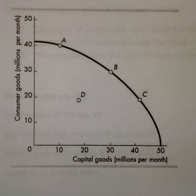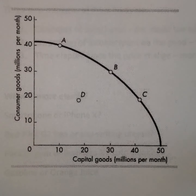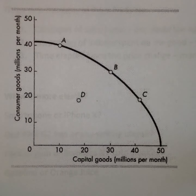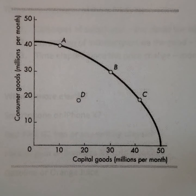On this graph, we want to figure out if each of these points represents a different country, which country would have the most economic growth. If you look at our production possibilities frontier, we're looking at the trade-off between consumer goods and capital goods.